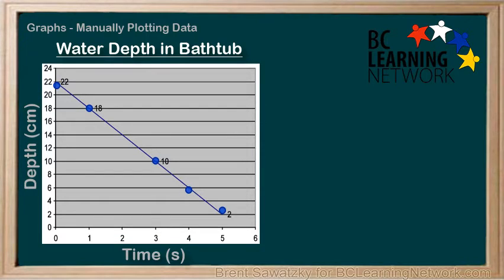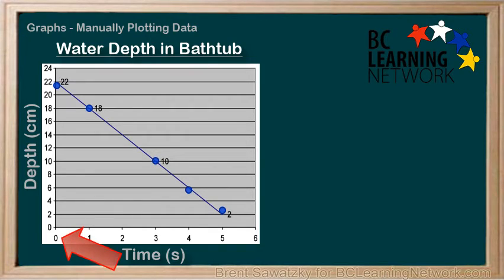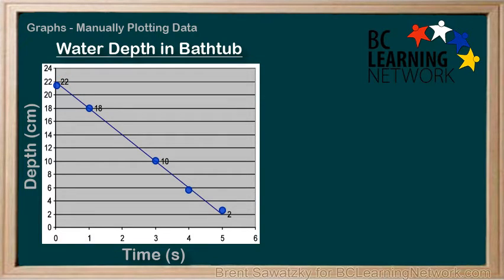Let's start by looking at the y-intercept and see what that has to tell us. The line crosses the y-axis at 22. Given the good axis titles, we can see that we're talking about the depth of the bathtub at the start of our data collection — that is, when time equals zero, the depth is 22. The graph also includes units in the titles, a requirement for a good graph. So we know that the tub started at 22 centimeters deep.